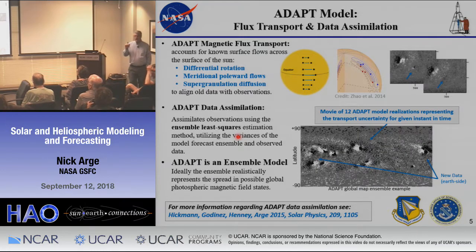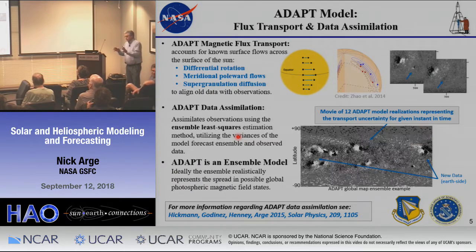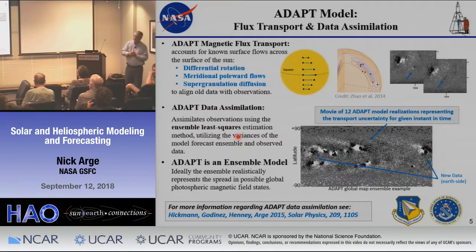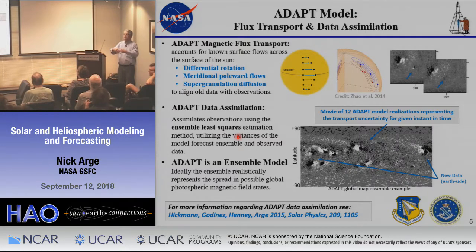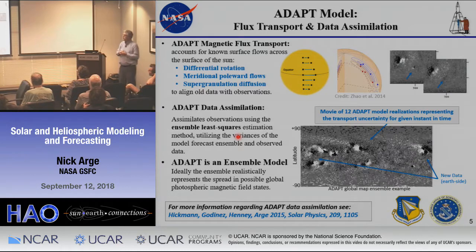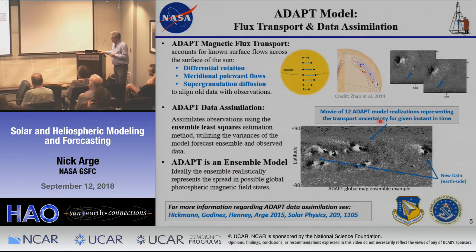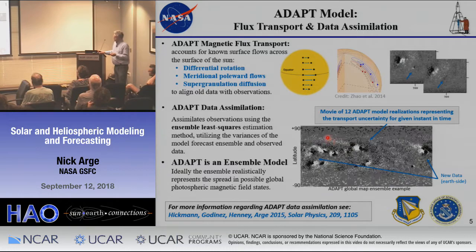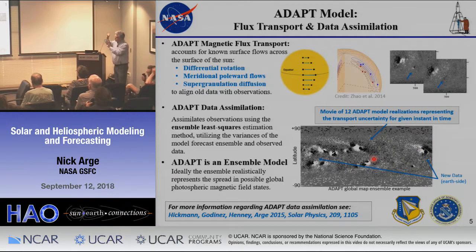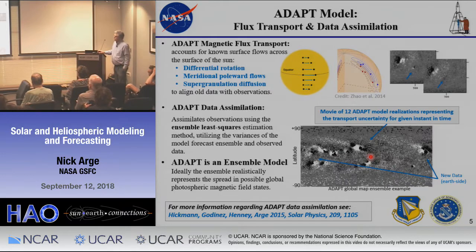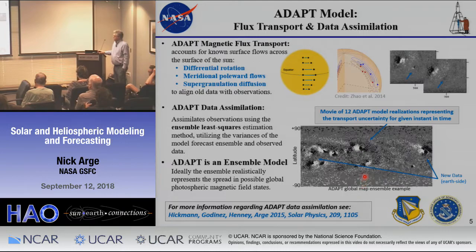A unique thing about ADAPT is that it's an ensemble model — it doesn't produce one snapshot of the sun, but rather an ensemble of solutions representing the range of uncertainty in our knowledge of the photospheric field distribution. This shows 12 different realizations of what the sun could look like for the same date. There's a lot of jumping around on the far side because we just don't know exactly what's going on there, and you'll see how this impacts the solutions.